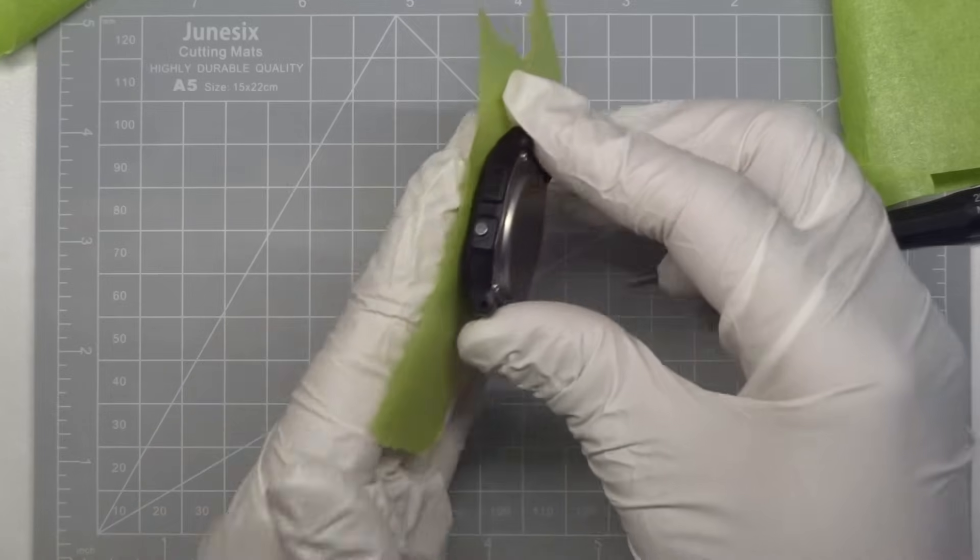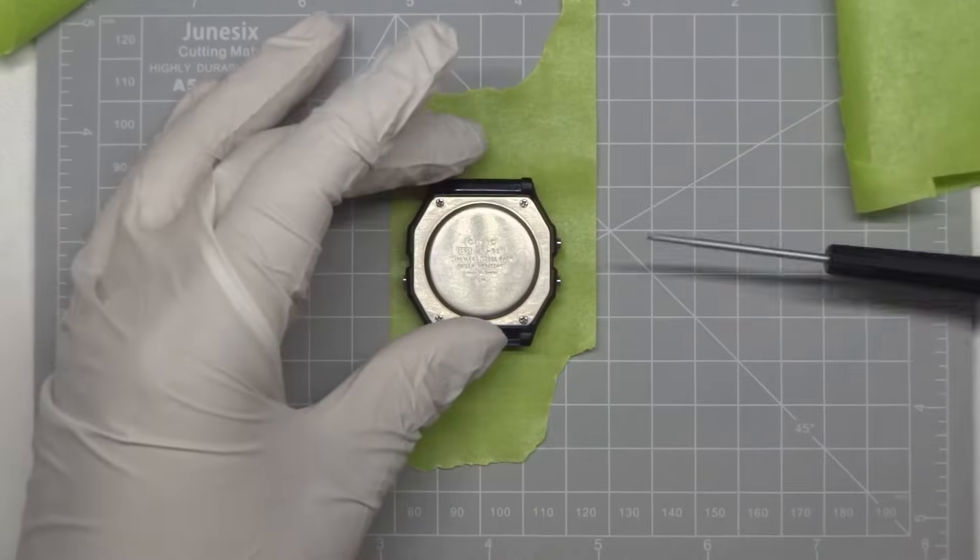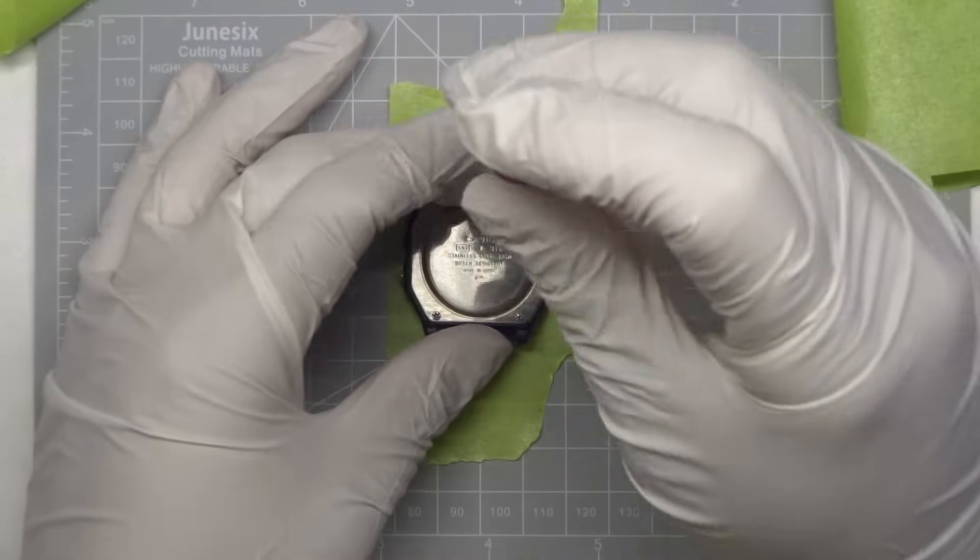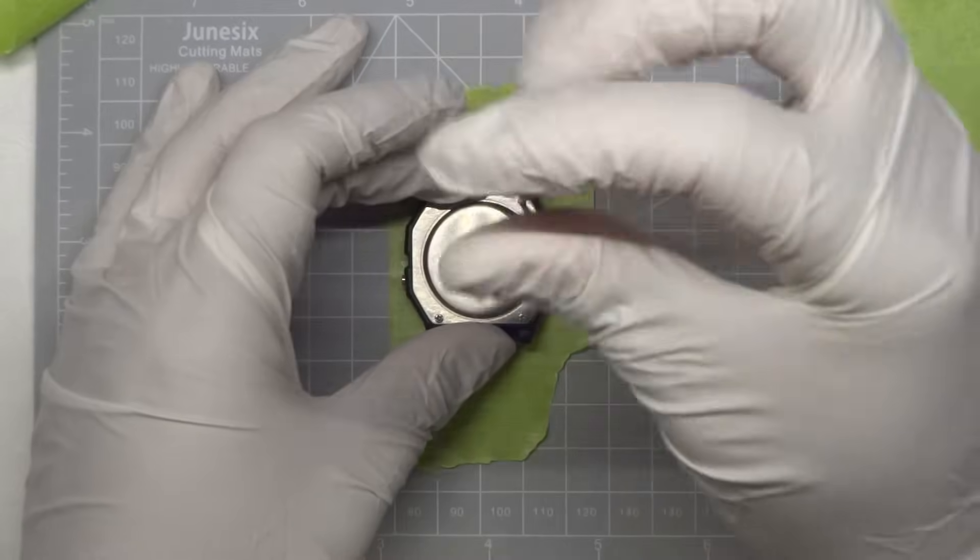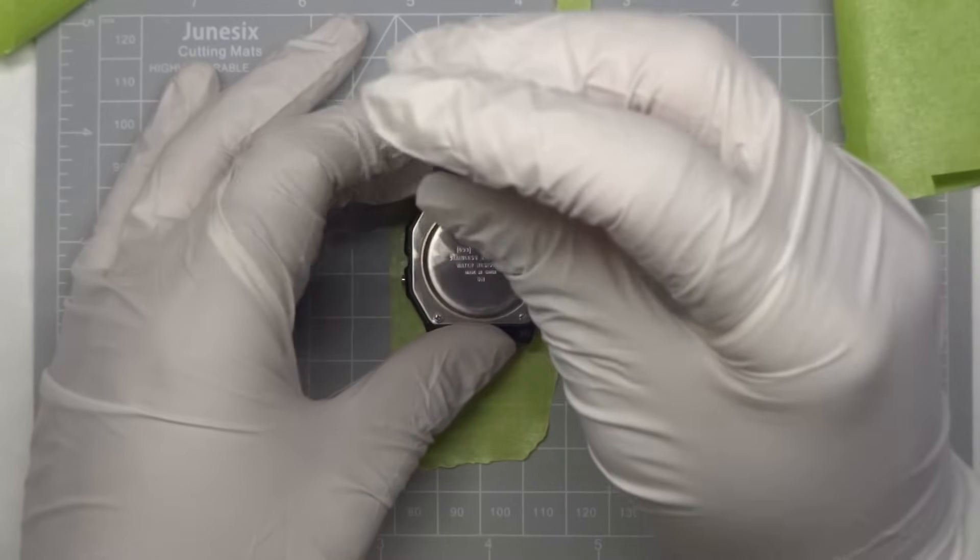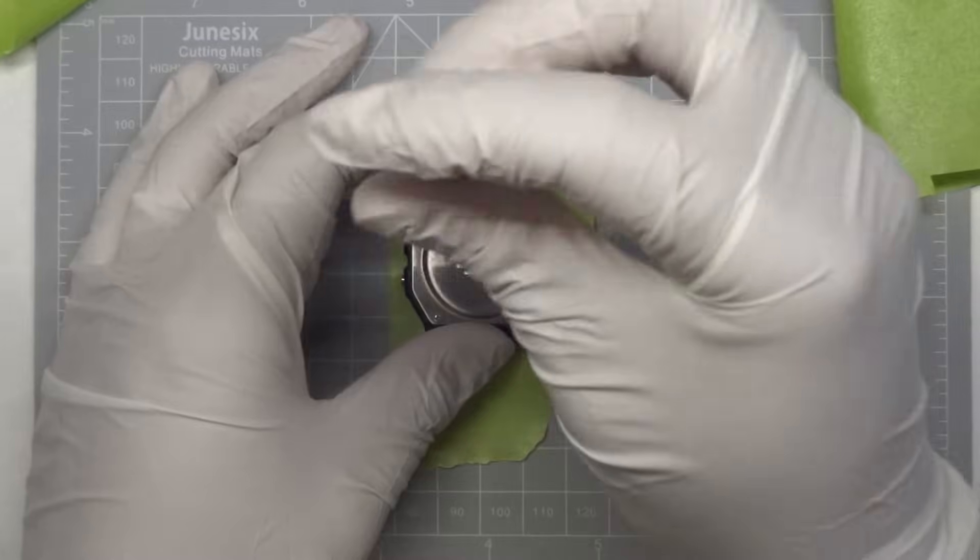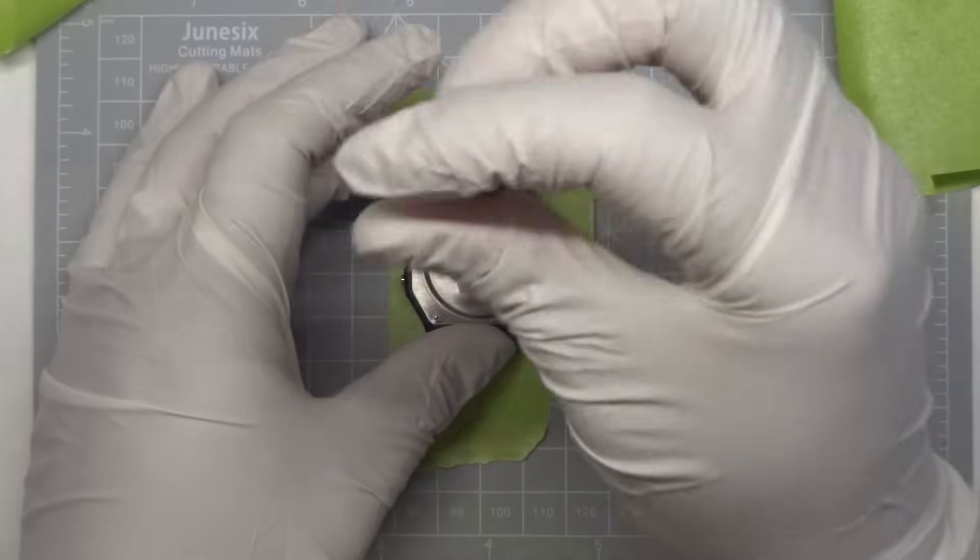First, protect the acrylic crystal of the watch with some tape to avoid scratching it. I like to use green masking tape which can also be used to remove and trap lint. Gloves are recommended to avoid having to clean oily finger smudges later.